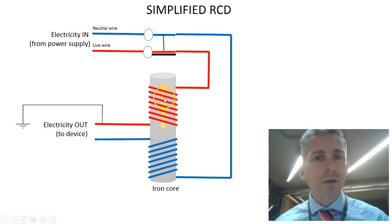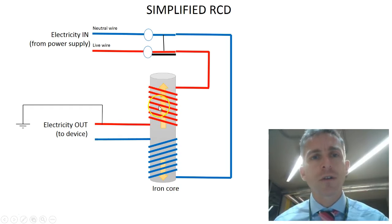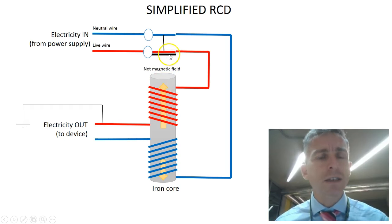In that instance, the current supplying the device would still be the same. And so the magnetic field to that device would be the same as it was before. But less current would return along the neutral wire as some is leaking away to Earth. And so the magnetic field produced by the neutral wire will be less than the magnetic field produced by the coil in the live wire. And that leaves a net magnetic field which will, of course, attract iron objects.